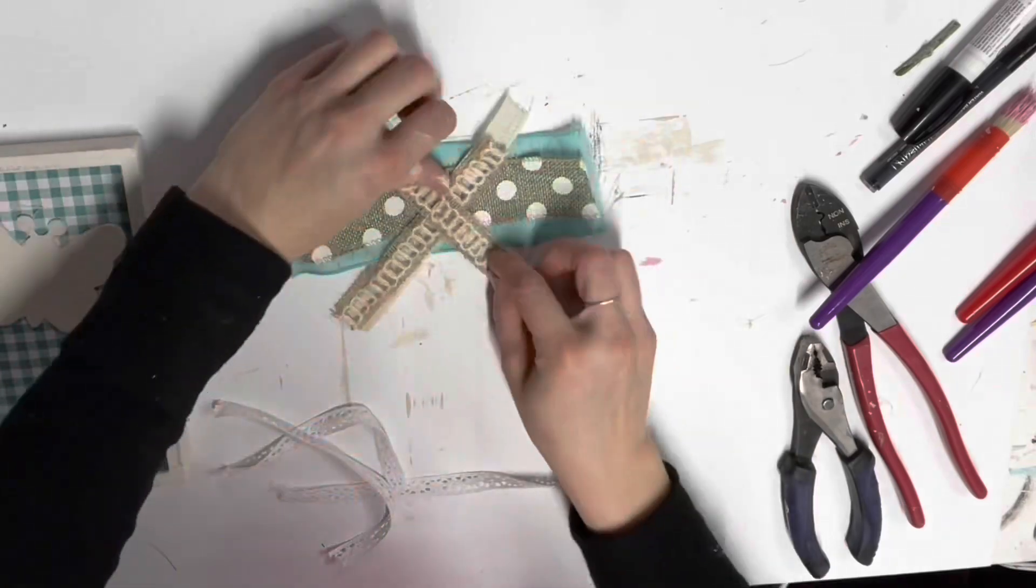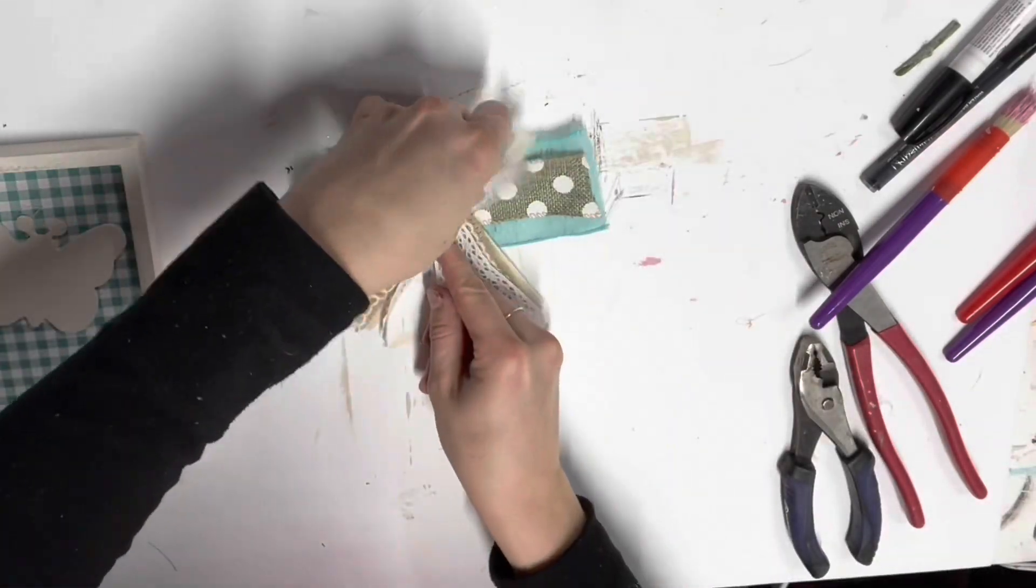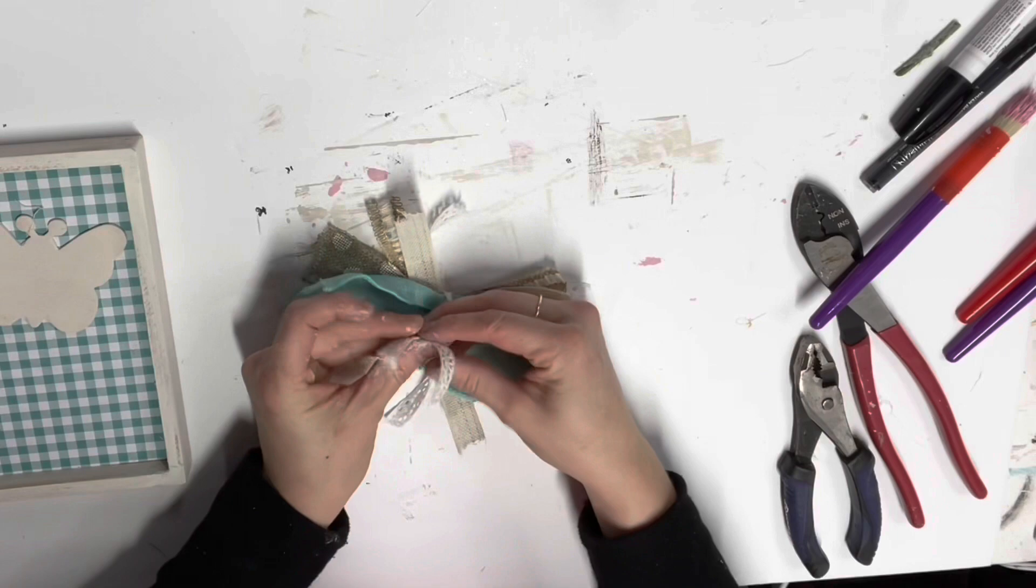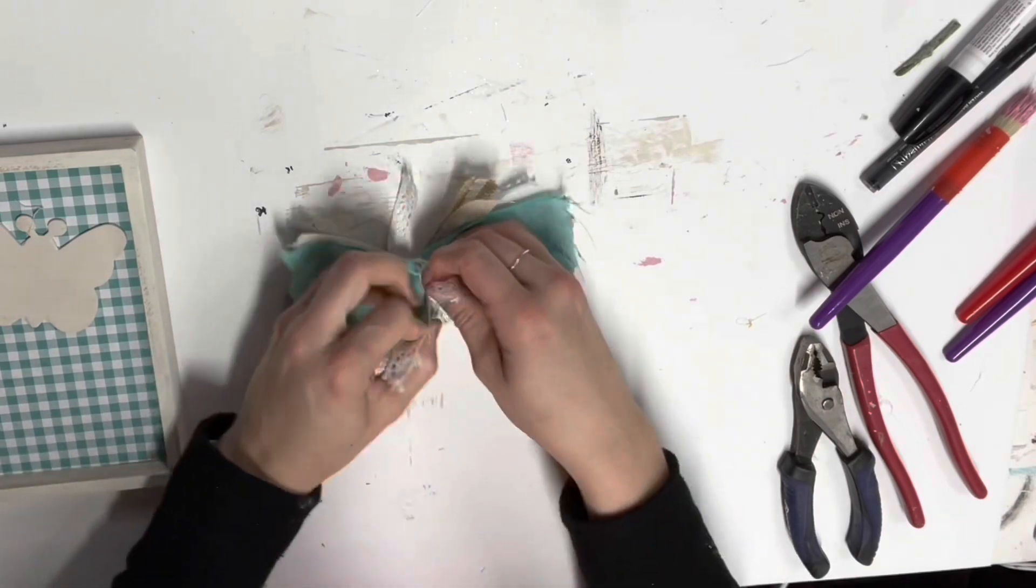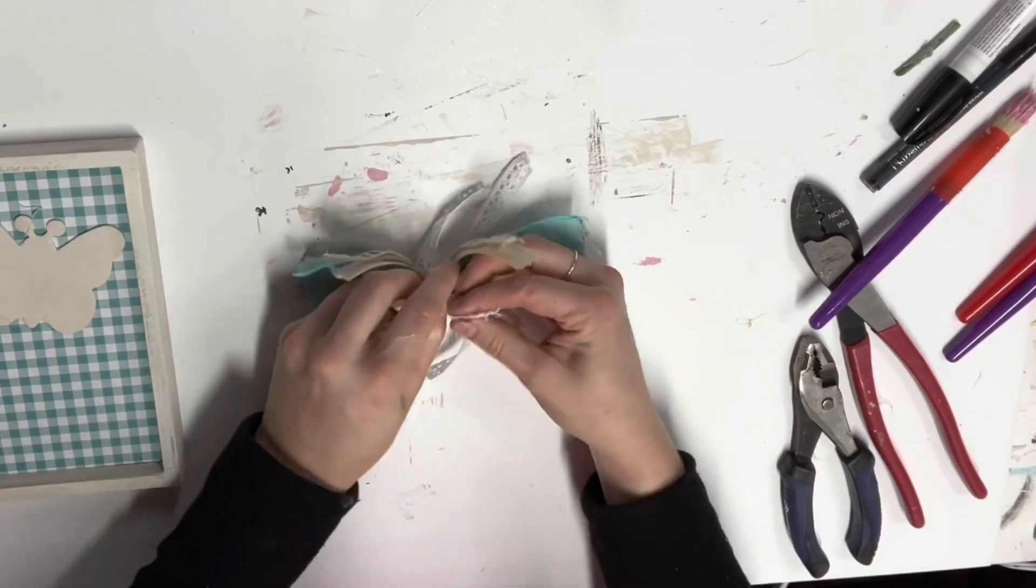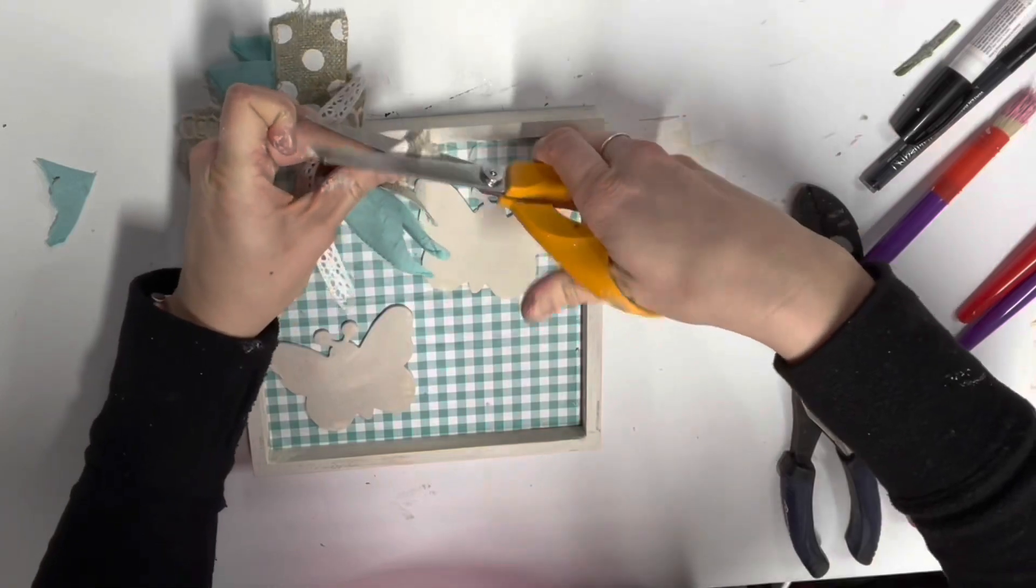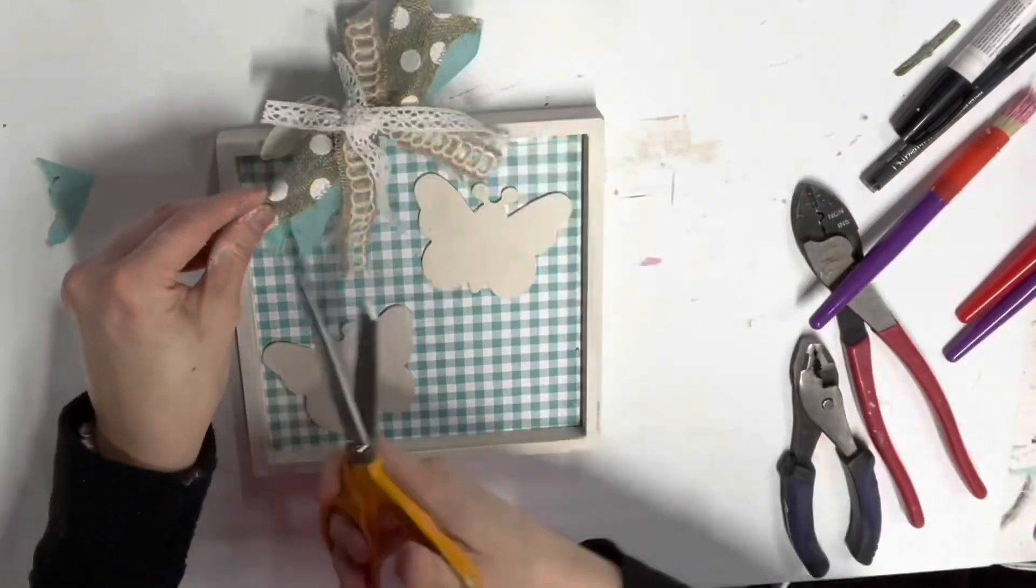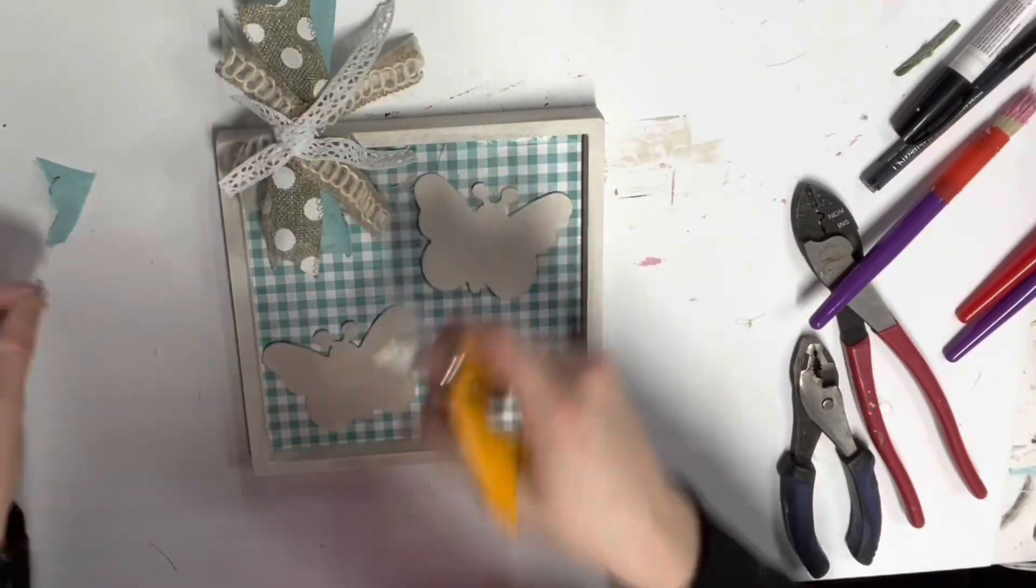So I ended up taking these butterflies from Dollar Tree and I painted them with the buttercream paint. And then I ended up hot gluing them onto the sign there and I made a little bow. I just crisscrossed some ribbons that you can see there and I just tied them together and then I trimmed it up, fluffed it up, hot glued it on. And then there was this little cute sign for like nothing.